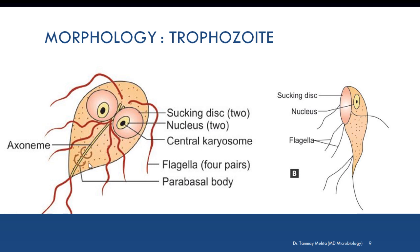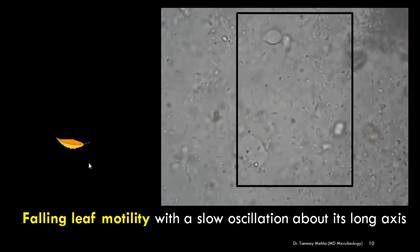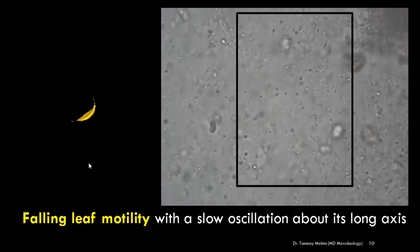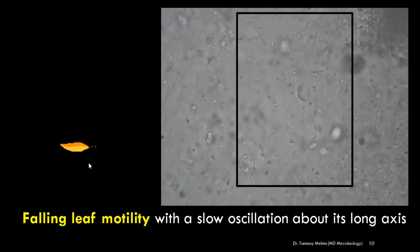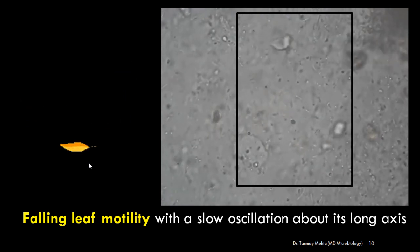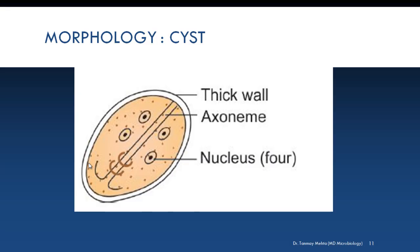The trophozoite is the motile and pathogenic form. It shows a falling-leaf-like motility with slow oscillation along its long axis, as demonstrated on the slide. The second form is the cyst — the infective and more resistant form. The cyst is very small in size and oval, surrounded by a thick hyaline wall. Its internal structures include two pairs of nuclei (four nuclei total). The axostyle or axoneme lies diagonally forming a dividing line within the cyst. Remnants of flagella and the sucking disc may also be seen within the cyst.